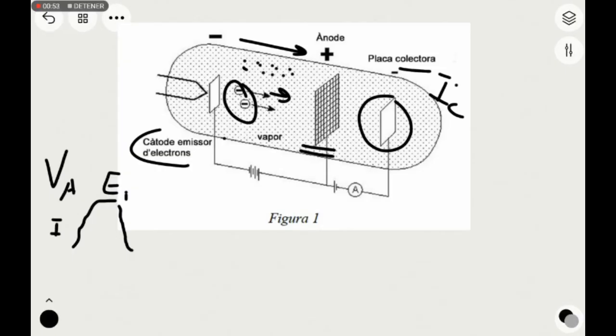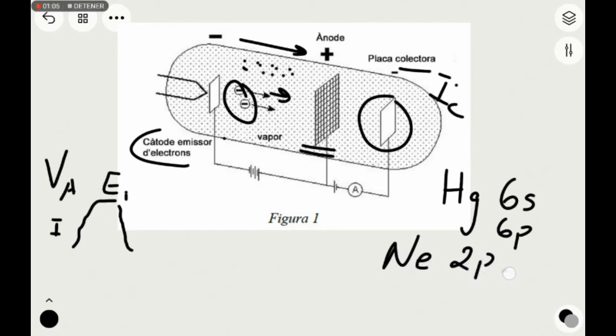In this experiment, we will examine the transitions in Mercury, between orbitals 6s and 6p, and Neon, whose transitions are observed between 2p and 3p, 3s and 3d orbitals, because they have values of energy very close to each other.